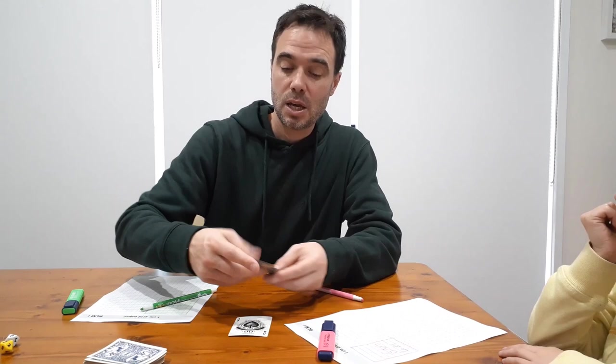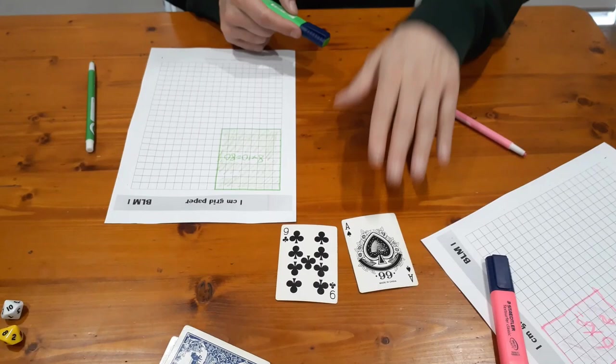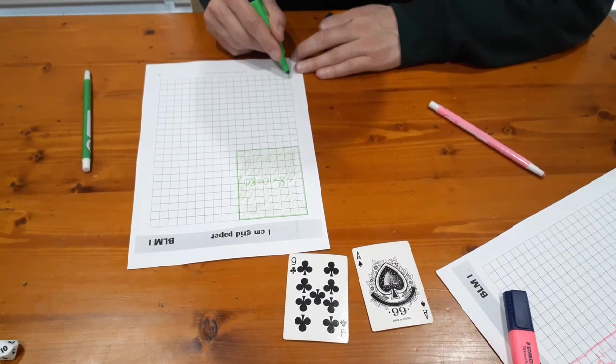Next turn we'll just play with a deck of cards showing how you can use cards. I've taken out all of the picture cards, so it just goes ace to ten.